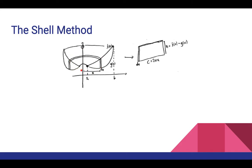Whereas if you're working with functions of y revolved around the y-axis, you will use the Washer Method. So essentially, if your variable matches up with your axis of revolution, you're going to use the Washer Method, whereas if your variable of integration — in this case x — does not match up with your axis of revolution — in this case y — you're going to use the Shell Method. We'll get more practice with this in class.